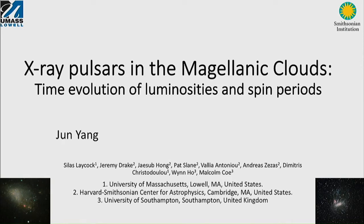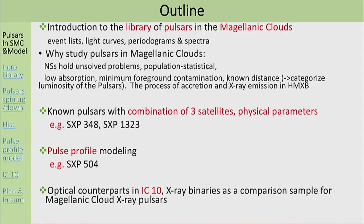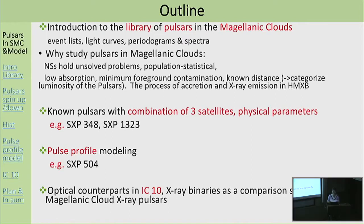I'm here to talk about the comprehensive library of X-ray pulsars in the Magellanic Clouds, including the time-evolution of their luminosities and spin periods. I'll start with an introduction to the library—the satellites and number of observations used—and the content: event lists, light curves, and spectra. The reason we study pulsars in the Magellanic Clouds is that neutron stars still potentially hold many unsolved problems. The low absorption and known distance of these galaxies help us easily characterize pulsar luminosities, which helps us understand the process of accretion and X-ray emission in high-mass X-ray binaries.